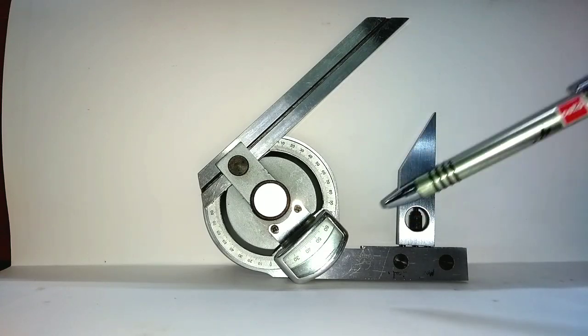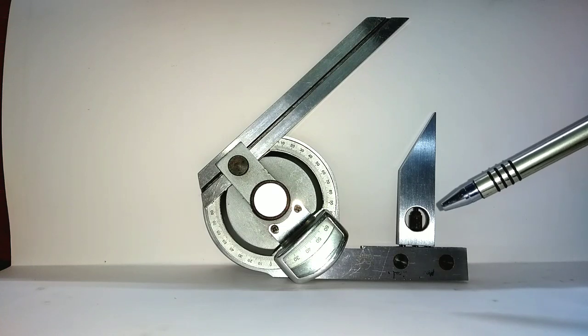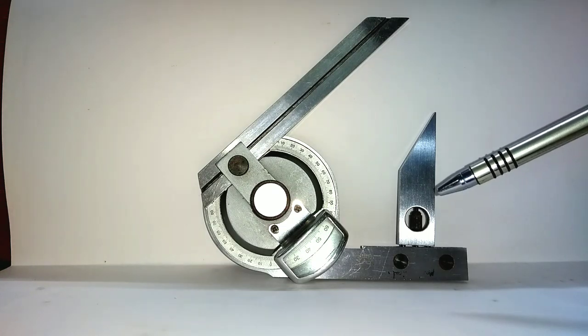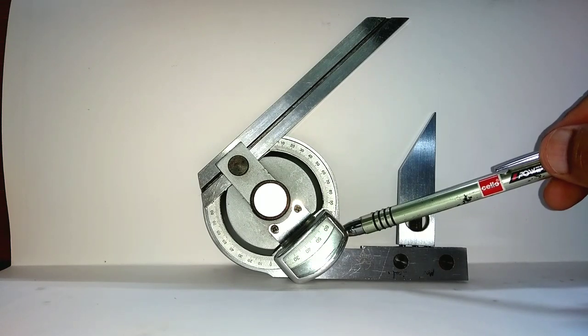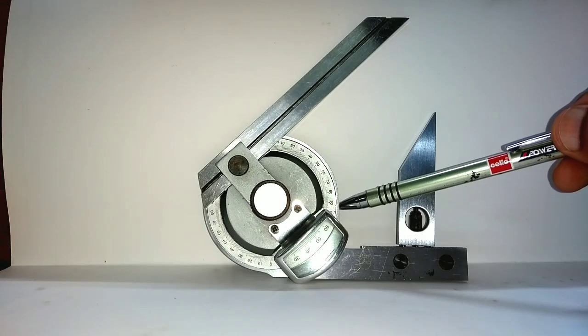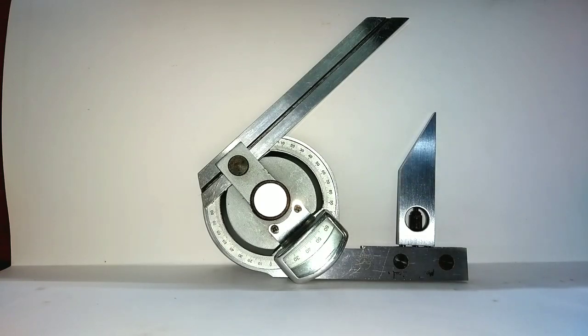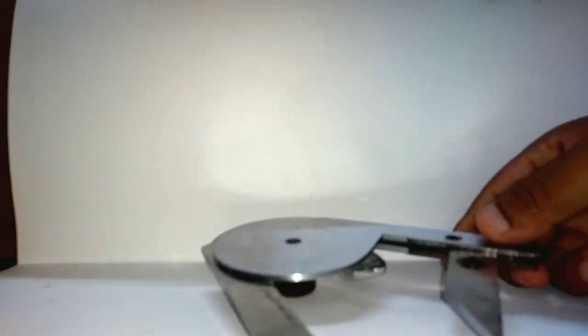Now we will closely look at how we are going to take the reading. Prior to that, we will explain the function of each part. This is the body of the Bevel Protractor. It is designed such that its back is flat. You can see the back of this Bevel Protractor is perfectly flat.